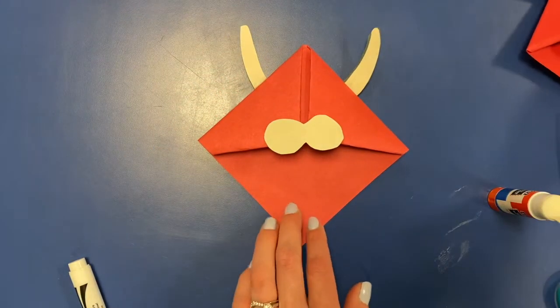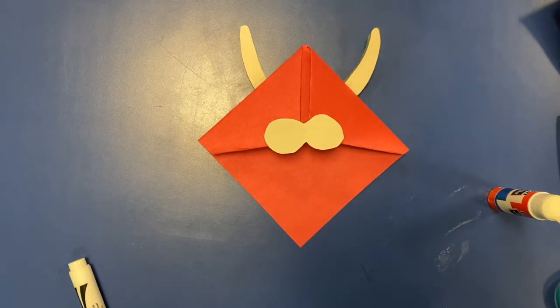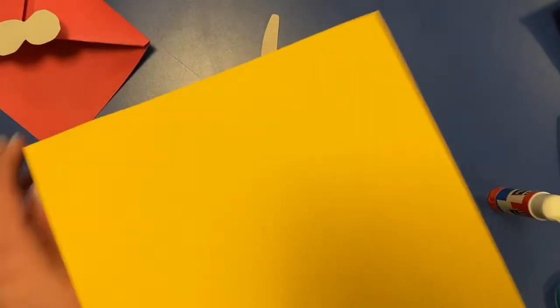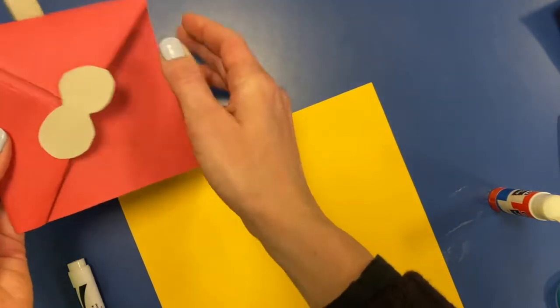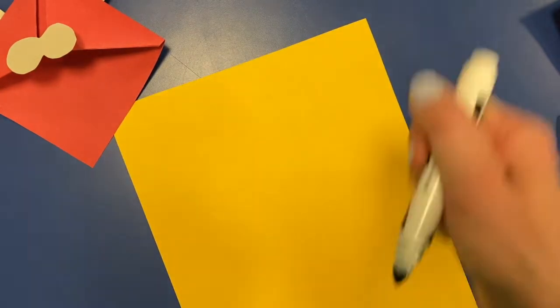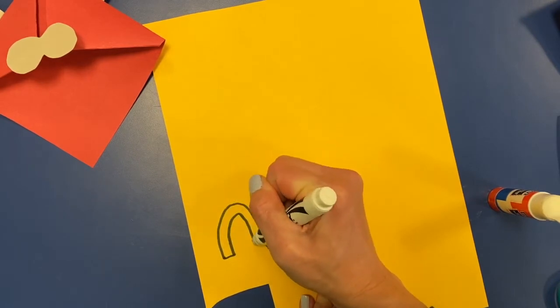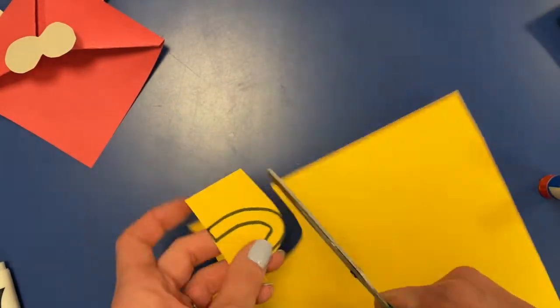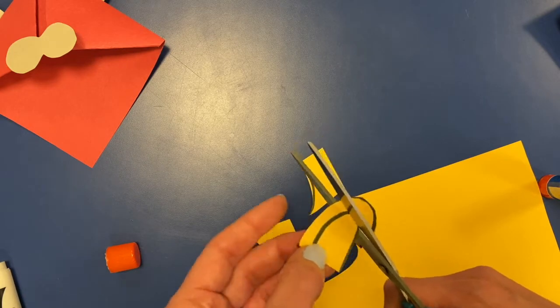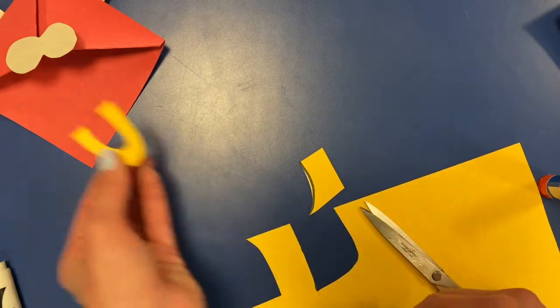Now we're going to cut out this nose ring here for the Ox. We're gonna use our gold paper to do that. So I'm gonna draw what looks kind of like a U on this and cut that out to make that nose ring. There's that nose ring.